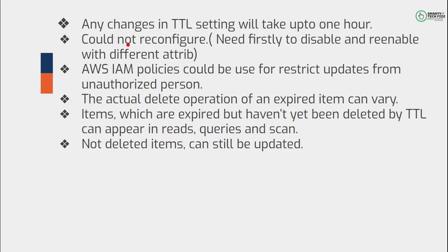Any changes to the TTL settings — such as enabling or disabling TTL — will take up to one hour to take effect. It may take a minimum of five minutes and a maximum of one hour. Also, you cannot reconfigure the TTL directly. If you want to change the expiration attribute to a different column, you must first disable the existing configuration and then re-enable it with the different attribute.